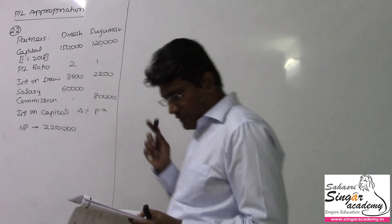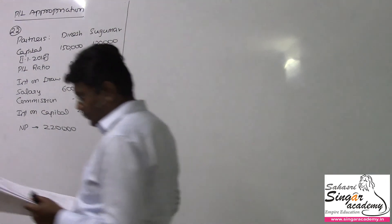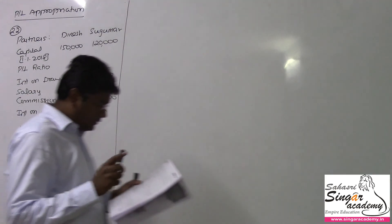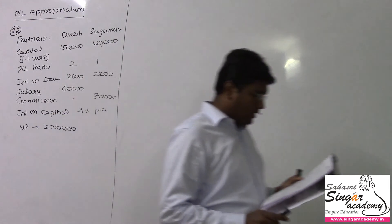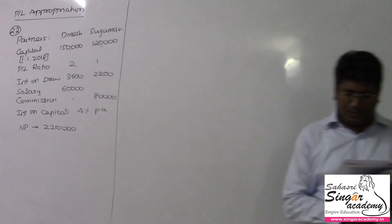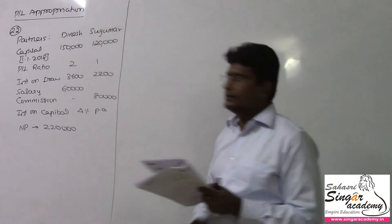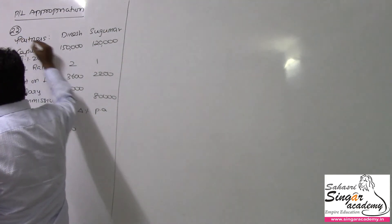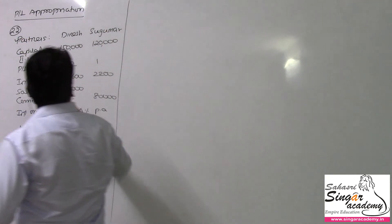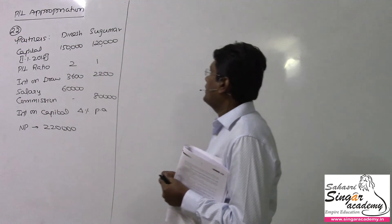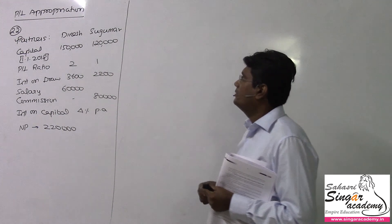We will be solving question number 22. Dinesh and Sugumar entered into a partnership agreement on 1st April 2018. In this problem, there are two partners: Dinesh and Sugumar.